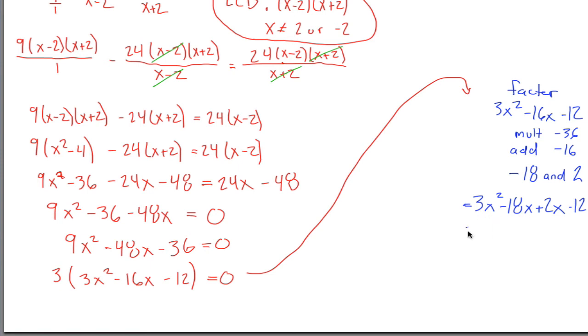So the greatest common factor between these first two is 3x. If I pull out a 3x, I'm left with x minus 6. If I want to be left with x minus 6 over here, I'd have to pull out a positive 2. So now I have x minus 6 in both of these, which I can factor out and be left with 3x plus 2.